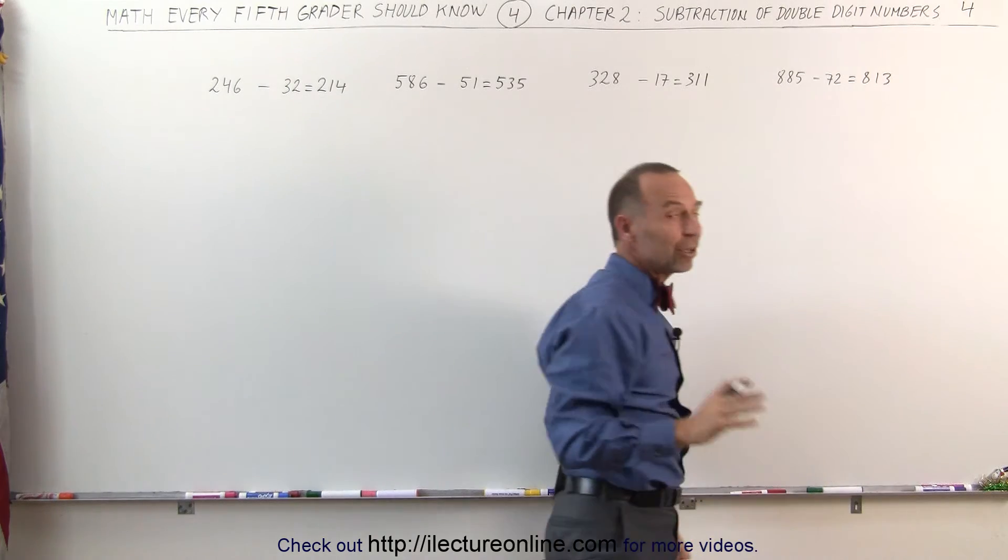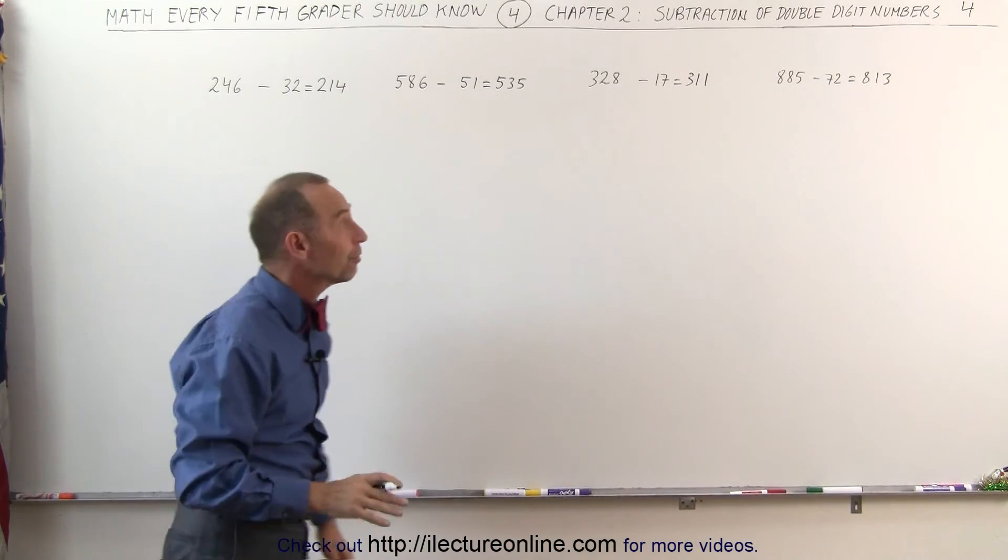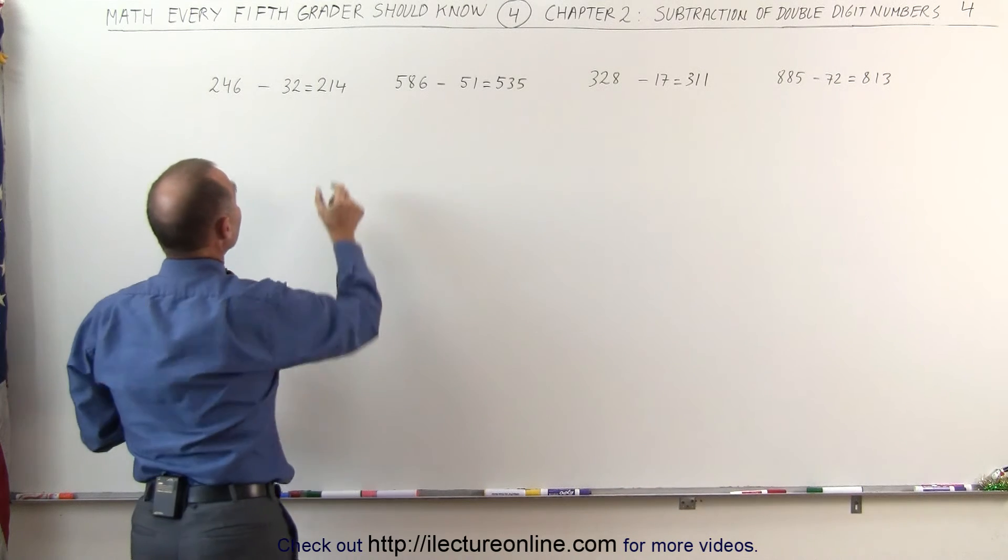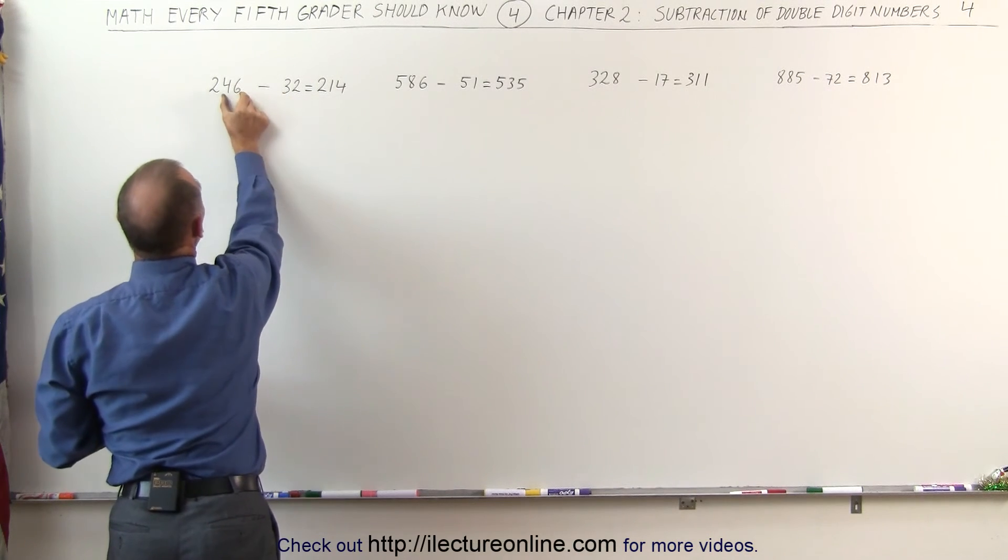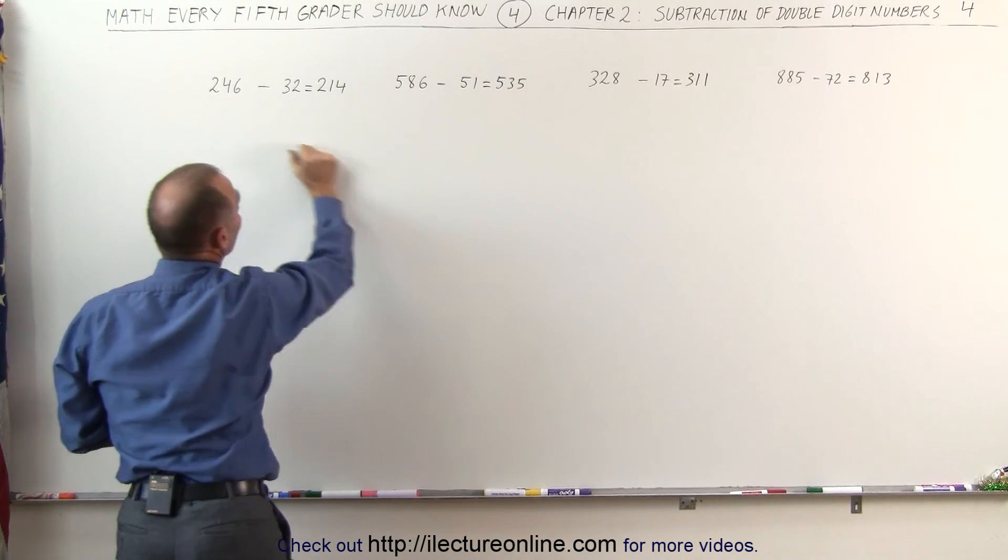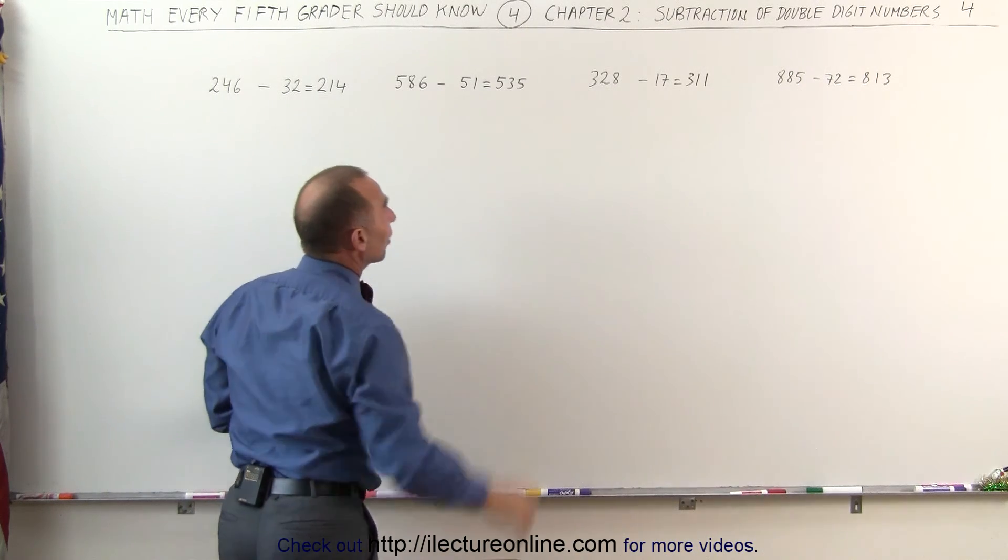And that's how we can very quickly subtract a two-digit number from a three-digit number, provided that these two digits are smaller than those two digits. 32 is smaller than 46, 51 is smaller than 86, and so forth.